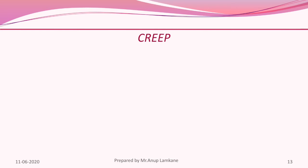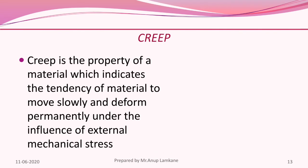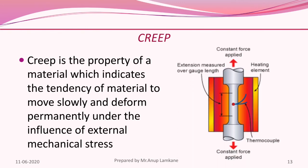The next property is creep. Creep is the property of a material which indicates the tendency of a material to move slowly and deform permanently under the influence of external mechanical stress. It results from long-time exposure to large external mechanical stress within the limit of yielding. Creep is more severe in materials that are subjected to heat for a long time, as shown in the picture.